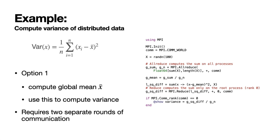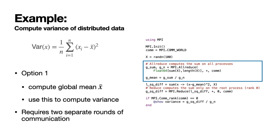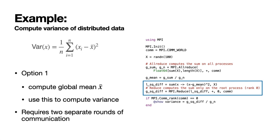For a second example, I'll show how we can use MPI for a distributed variance computation. There are a couple of different approaches here. The simplest is to first compute a global mean using an MPI Allreduce, which computes the sum of a quantity over all the MPI ranks and then redistributes the total to all of them. We then use this sum to compute the mean, and the sum of squared differences from the mean on each rank, and reduce that back to rank zero to print the result. The downside of this approach is that it requires two separate rounds of communication.